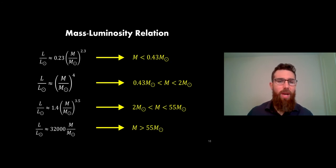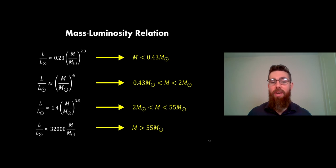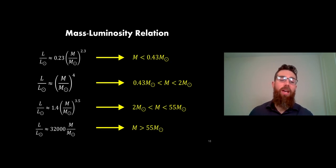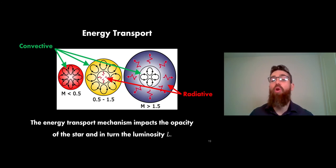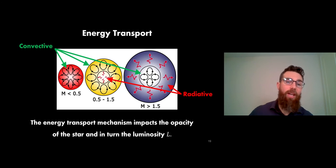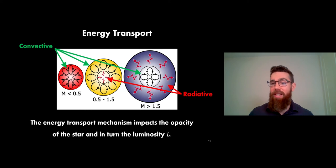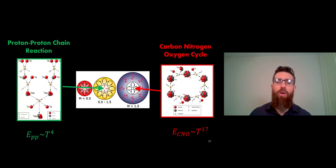For smaller stars the luminosity scales with mass to the power of 2.3, for solar-mass stars it's about mass to the power of 4, and it changes again for stars greater than two solar masses, with the most massive stars having a different relation. What's driving this is predominantly the energy transport mechanism - whether it's convective or radiative impacts their luminosity. The energy transport mechanism affects the opacities of the star, and that in turn alters luminosity because if the star is quite transparent or opaque it alters how much energy comes from the surface.